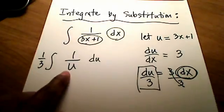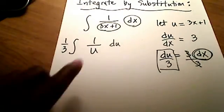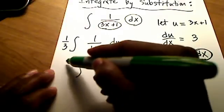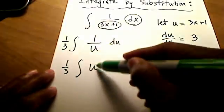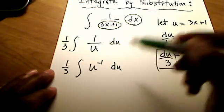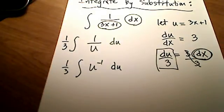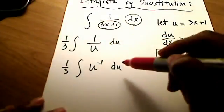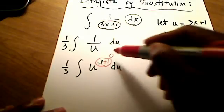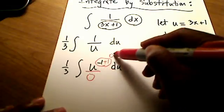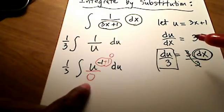Notice that 1 over u can be written as u to the negative first power. But what happens if I employ the antiderivative trick of adding 1, which gives exponent 0, and dividing by that new exponent? We can't divide by 0.